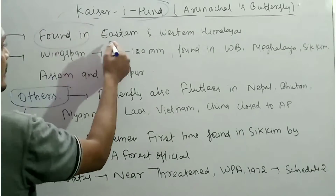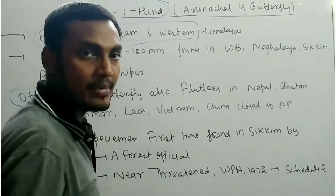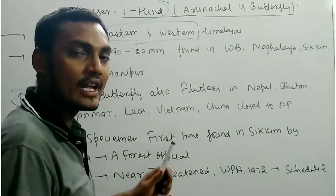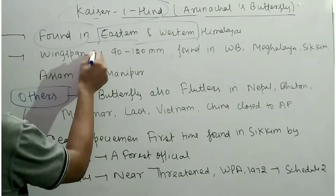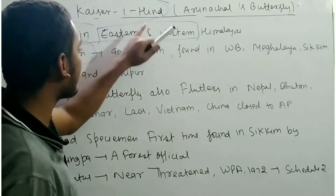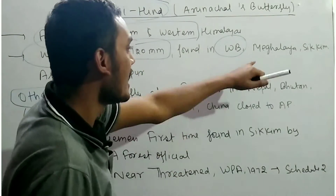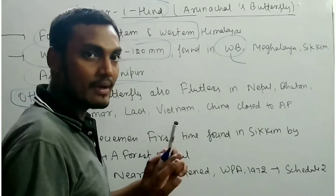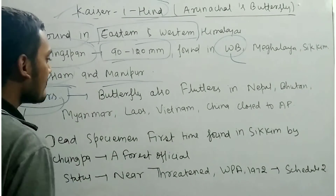The Kesar Ayind is found in both the eastern and western Himalayas, associated with temperate evergreen forests where leaves do not fall throughout the year. Its wingspan is 90 to 100 mm. In India, it is found in West Bengal, Meghalaya, Sikkim, Assam, and Manipur.